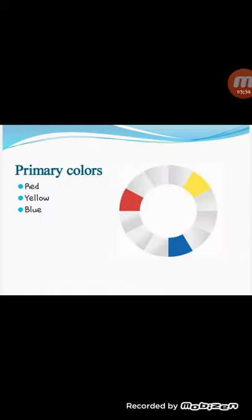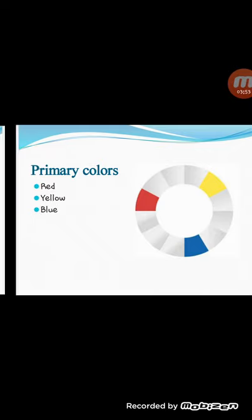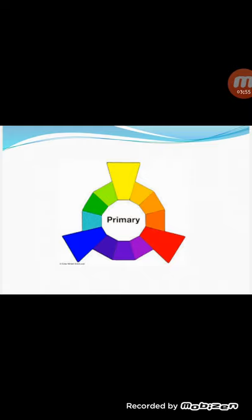Primary colors are not mixed from other elements — they generate all other colors. Every color is made up of some combination of these three: red, yellow, and blue. Red, yellow, and blue are the primary colors and cannot be created by mixing other colors.